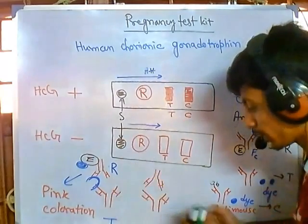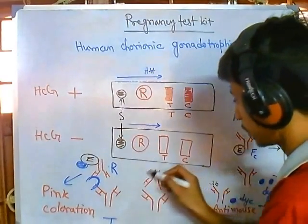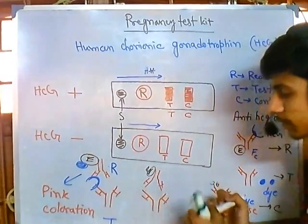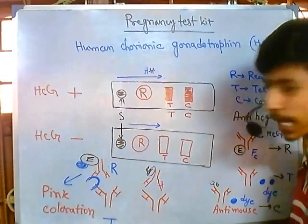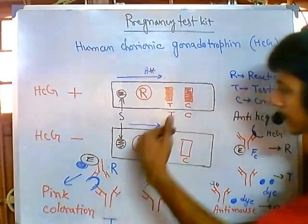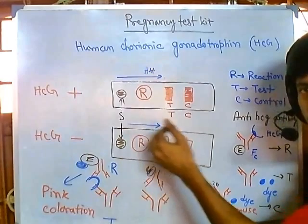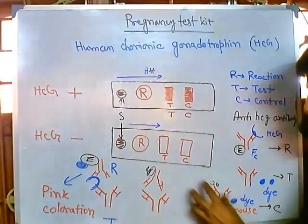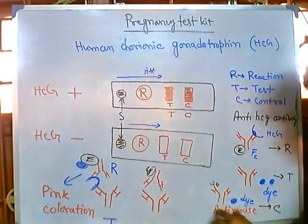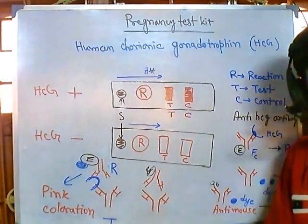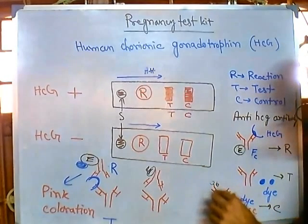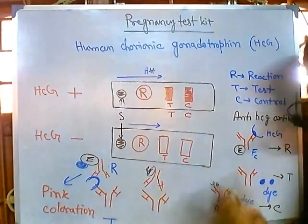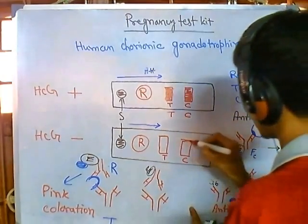The only way a band appears at T is if there is contact between R antibody and T antibody via HCG in between. Without HCG, though the R antibody carries the enzyme, there is nothing to anchor it, so there is no enzyme-substrate activity and no band at T. The T antibodies are washed through and reach the C region. In C, the anti-mouse antibody binds the FC portion of the incoming R antibody, the dye precipitates, and a color band appears in the C region.